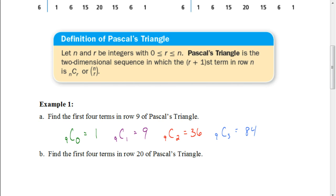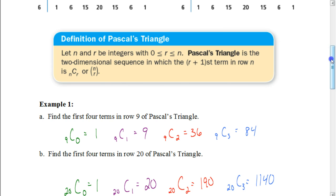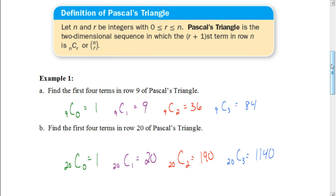Let's see how you did. You should have come up with: 20 choose 0 is 1, and 20 choose 1 is 20. Notice the pattern: in the 9th row the second number was 9, and in the 20th row the second number is 20. So the second number in each row is going to be whatever row number we're in. The other two terms you can find on your calculator.